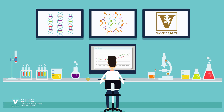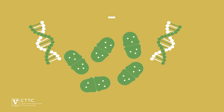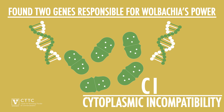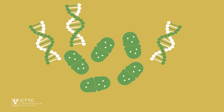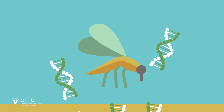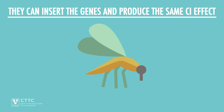Scientists at Vanderbilt made an amazing discovery that could harness the power of this Wolbachia bacteria. They identified two genes responsible for Wolbachia's unusual power to cause infertility in uninfected hosts — a power that biologists call CI, which is short for cytoplasmic incompatibility. The researchers found that the more copies of these CI genes that Wolbachia carries, the more powerful the lethal effect it produces and the faster it can spread. They also found that they can insert these genes directly into the genome of an insect host and produce the same CI effect without the bacteria being present.